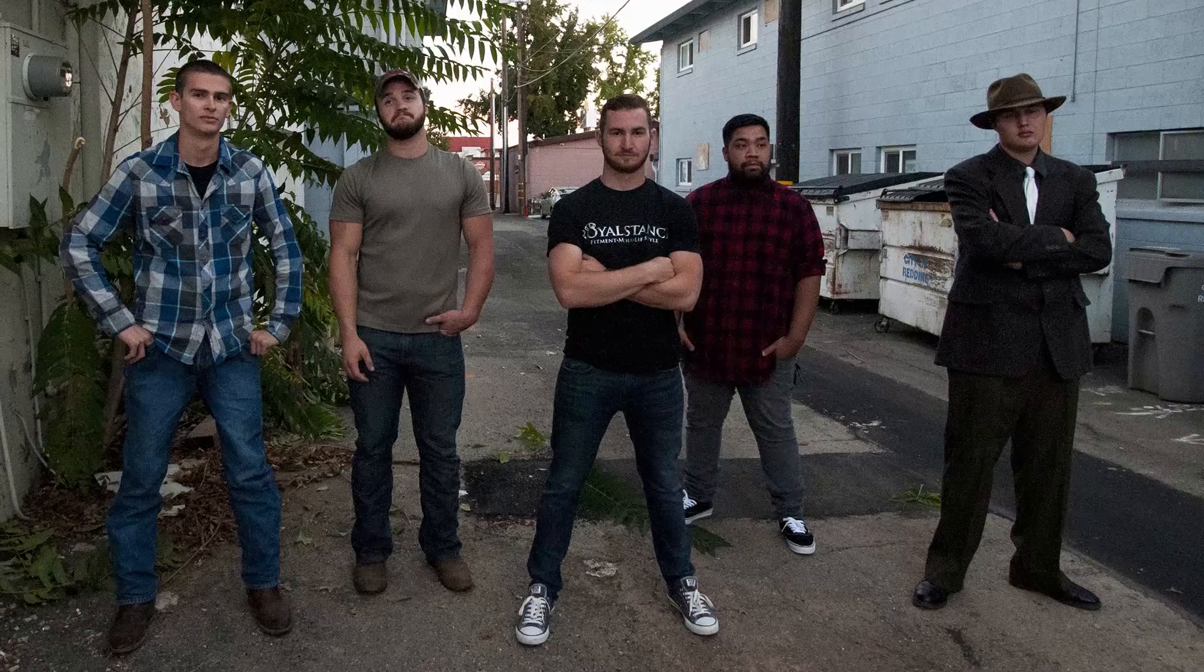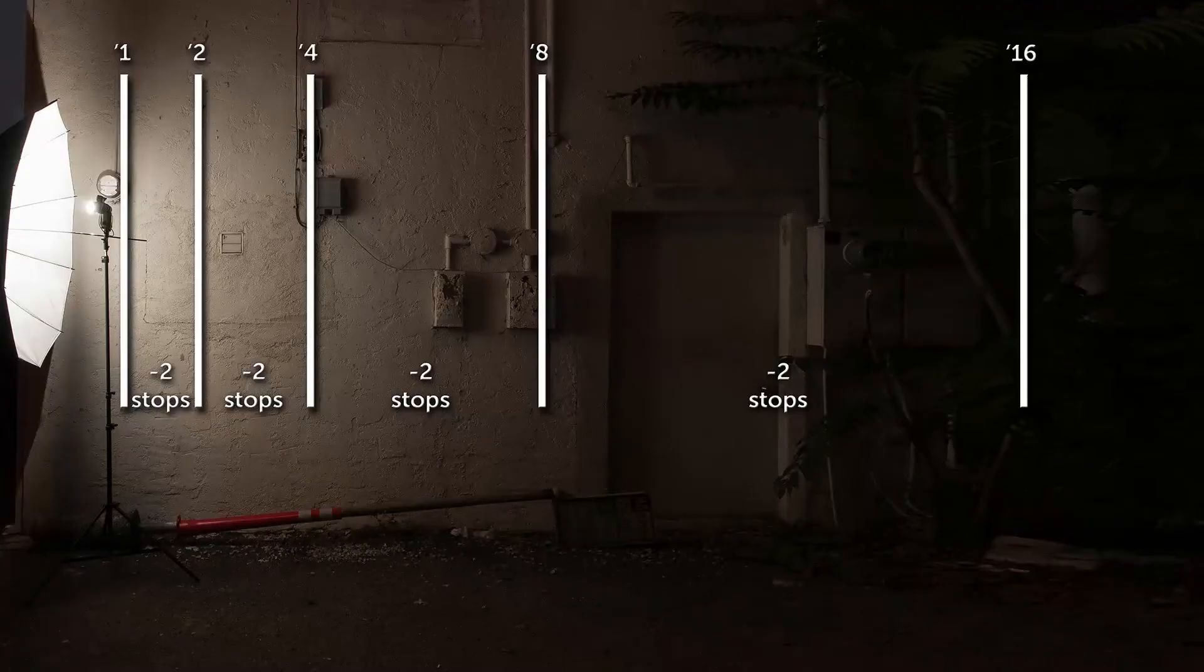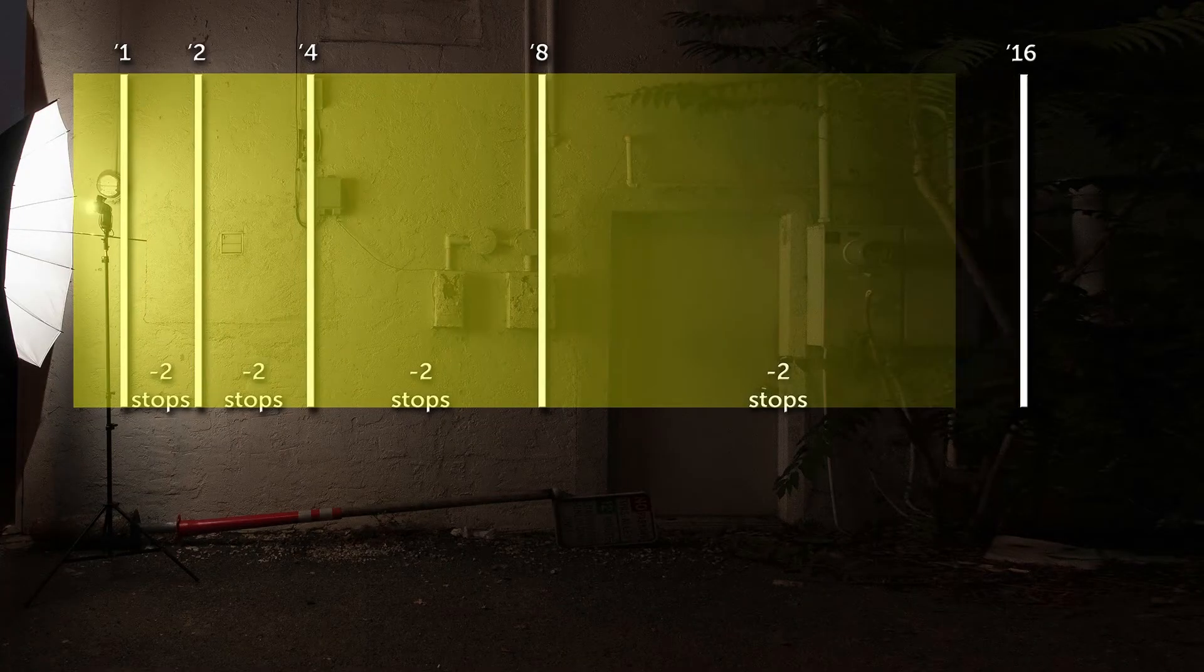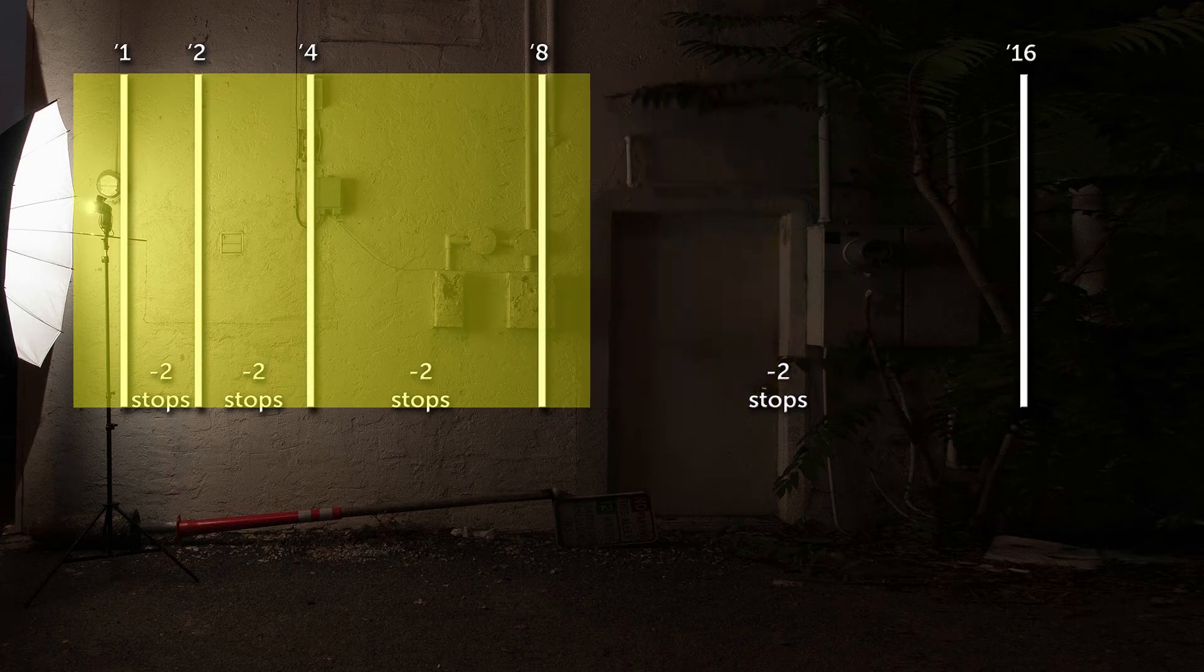What's cool about all of this is you can almost think of light as having depth of field. The closer you get to your light source, the narrower the depth of consistent light.